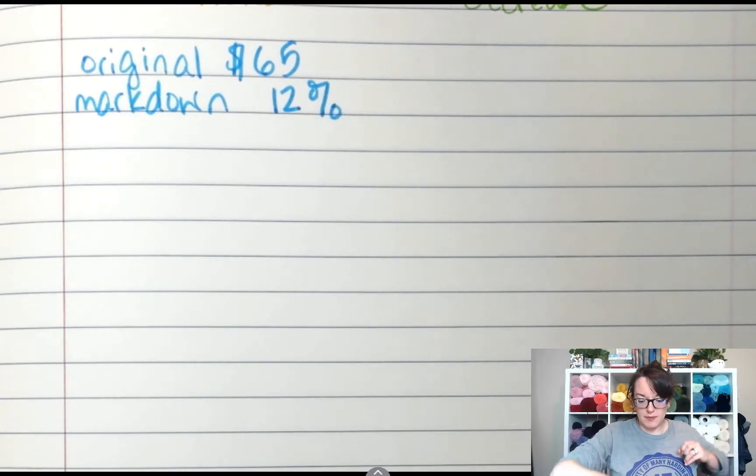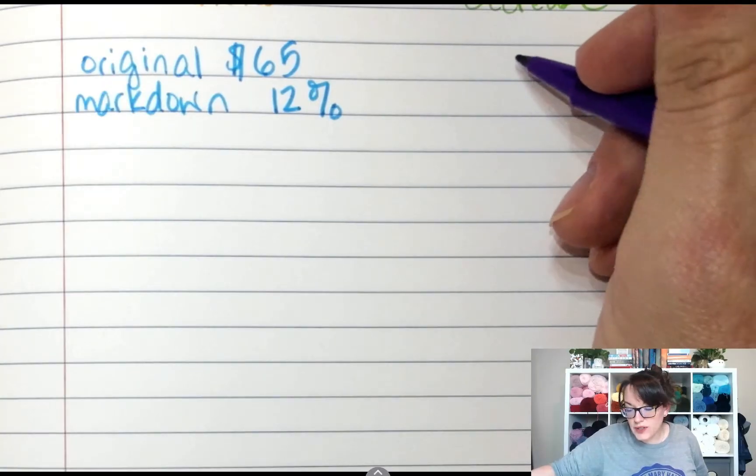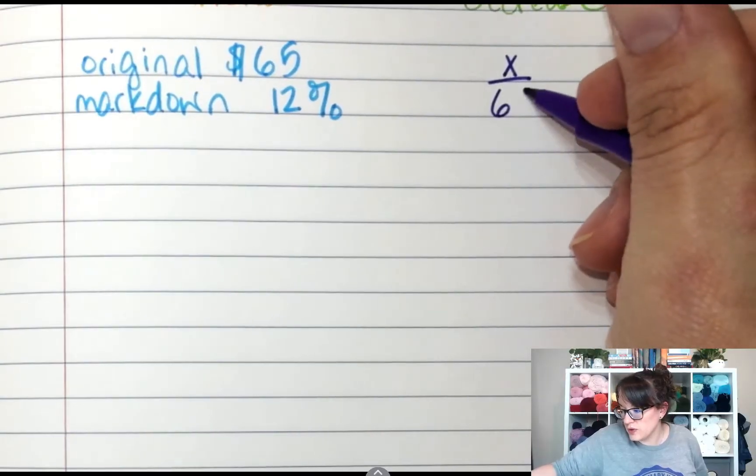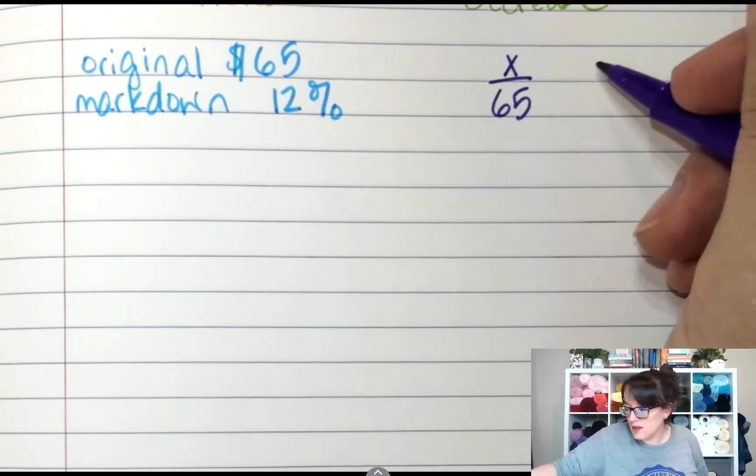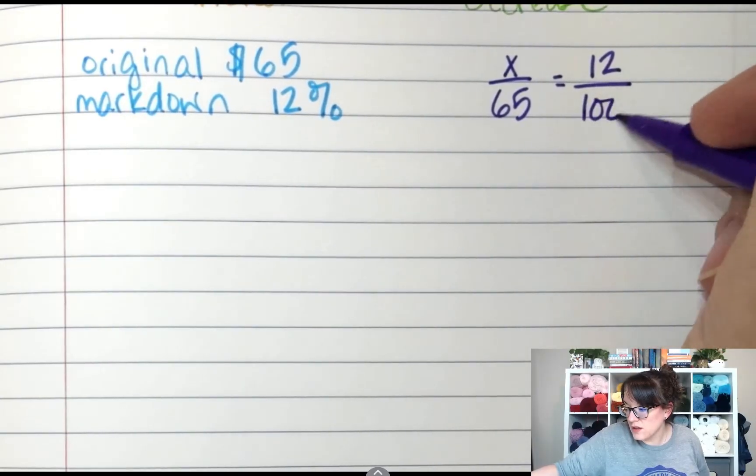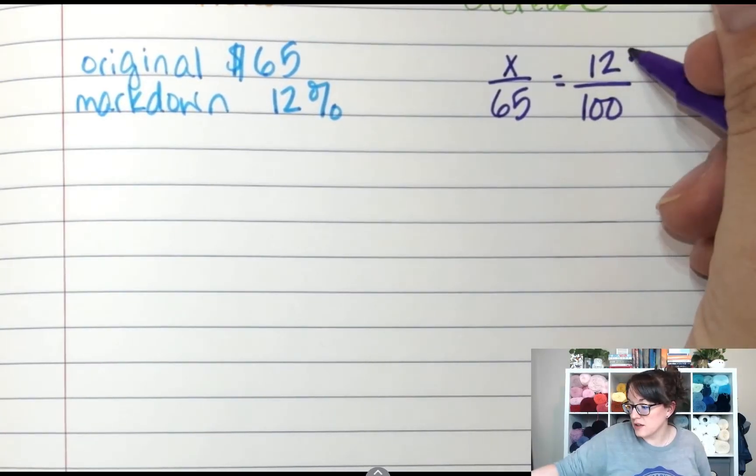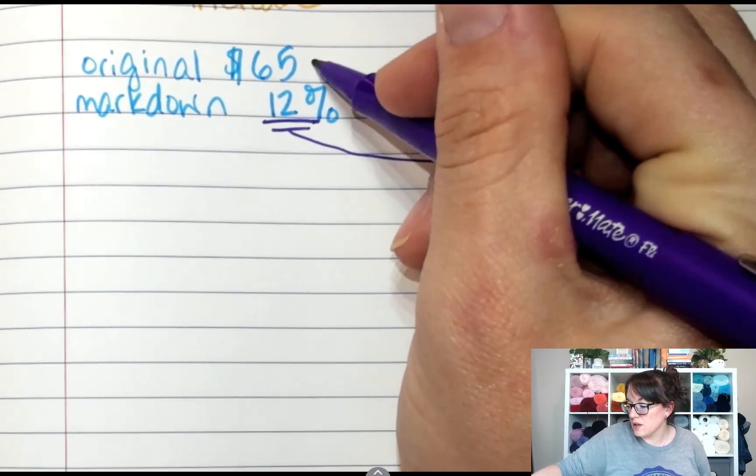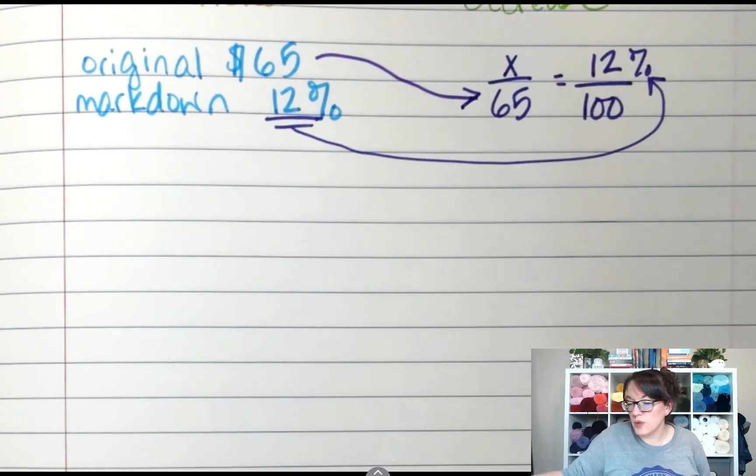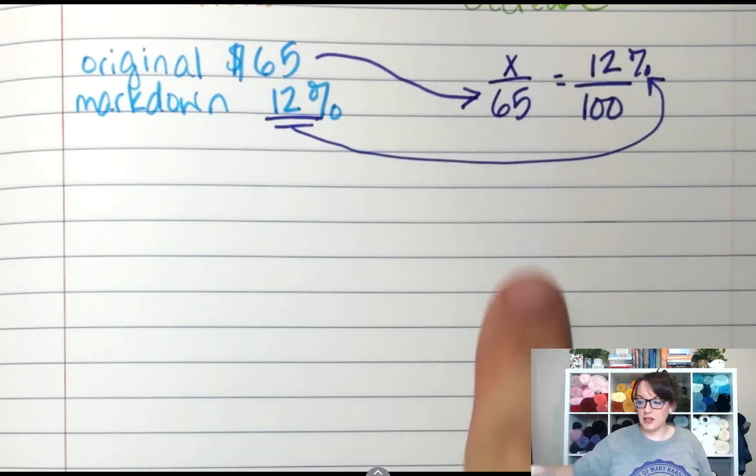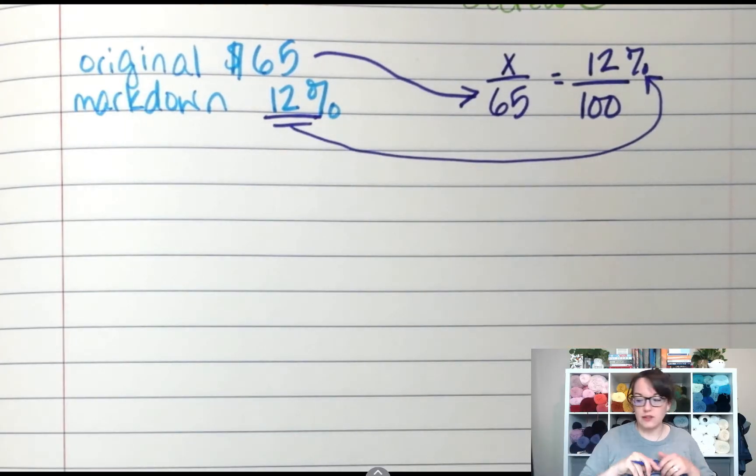So when I set it up, I'm going to put I do not know the difference, so that's my X. I do know the original, so that goes there. I do know the percent, so that goes there, and 100 goes there. Because again, we're looking at the change compared to the original. Change compared to the original.